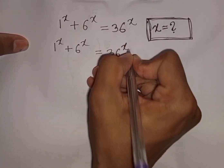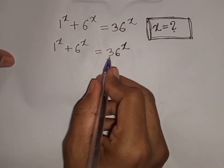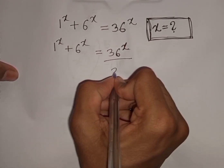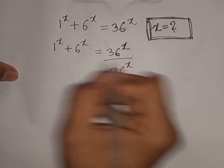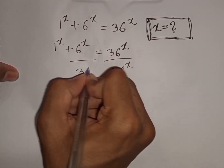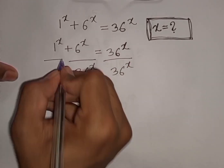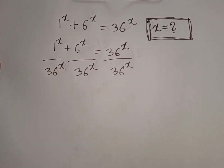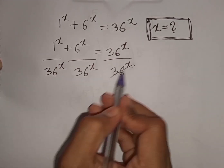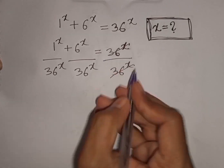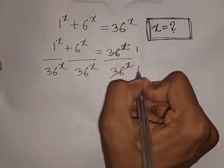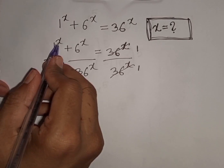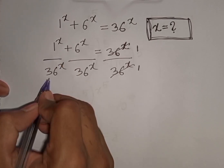Now we divide by 36 power x on both sides — dividing 36 power x on both sides. Now this will be cancelled. From here we see x, x same power but different base.